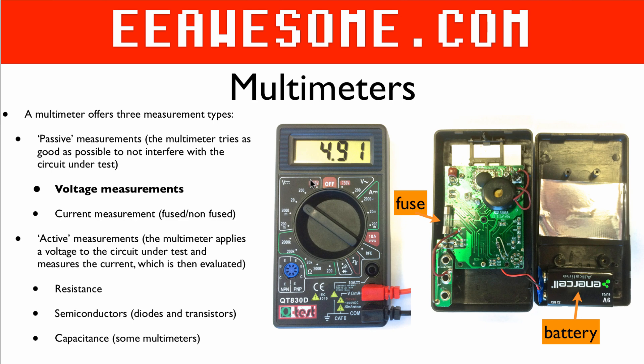There is the voltage range and this is for DC. Then over here is one for AC. Here's a range for measuring small currents, a range for measuring big currents. Then here we can measure resistance.